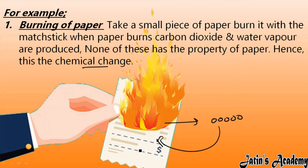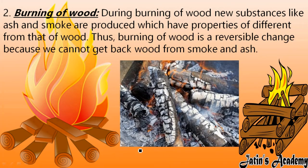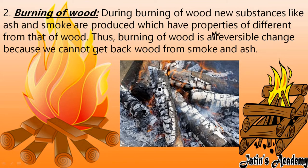So whenever chemical changes occur, chemical properties change — that kind of change is known as a chemical change. It is also an irreversible change, so we cannot convert this ash back into the original paper. Next, burning of wood: during burning of wood, new substances like ash and smoke in the form of carbon dioxide are formed. These ash and smoke have entirely different properties compared to wood. Burning of wood is also an irreversible change because we cannot convert this ash or smoke back into the original wood.